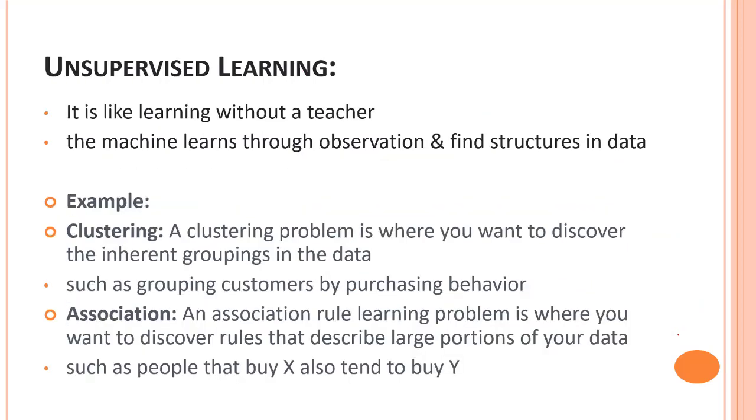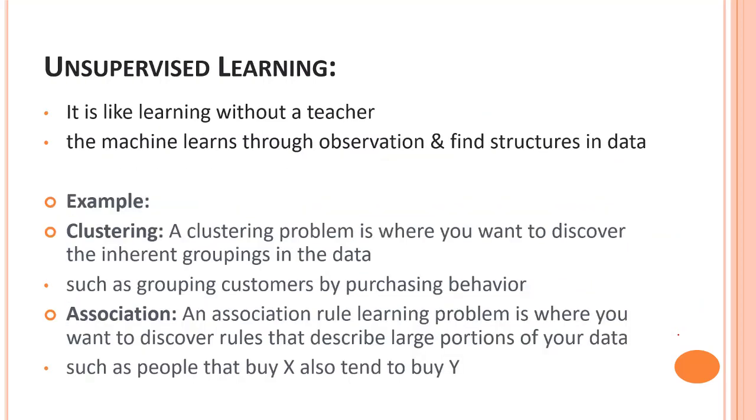So that was all about supervised learning. Let's look into unsupervised learning. It is like learning without a teacher. The machine learns through observation and finds structures or patterns in our data. That helps us with clustering and association.